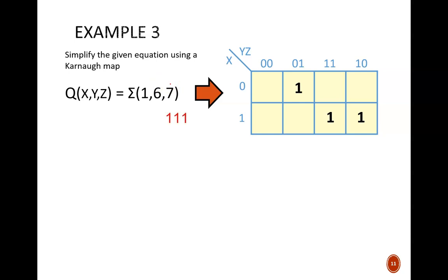We are able to use a group of 2 in the bottom right. This gives us the product term xy. Unfortunately, this 1 up top is adjacent to no other ones. This means we must use the smallest possible group size. Pause the video and identify the product term for this tiny group. The product term is x prime y prime z. With a group size of 1, no input variable can change within the group, which means all three of them are present in the product term.